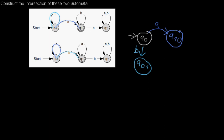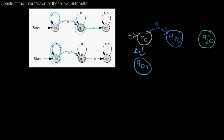There are no more transitions from the initial state to take care of. Let's go on to Q01. We are now here and here. When we make another A transition, we will go to Q2 in the first automaton and stay in Q0 in the second automaton. So we move to a new state in our new automaton which I call Q20, reachable with A.